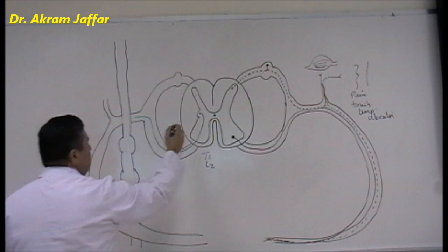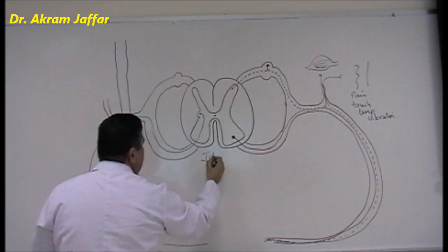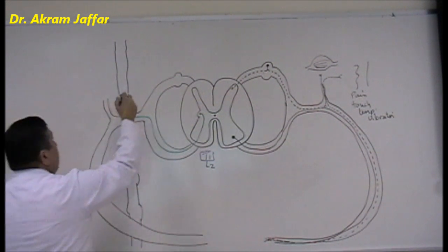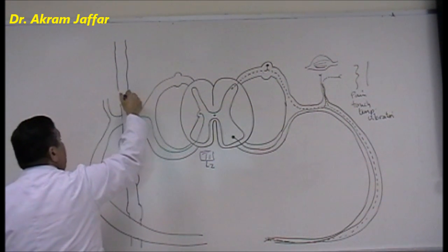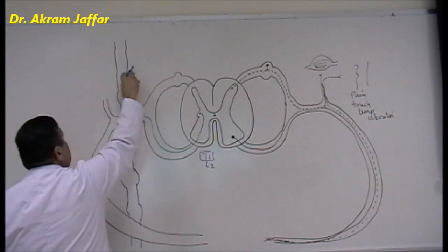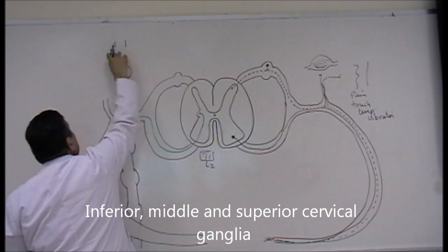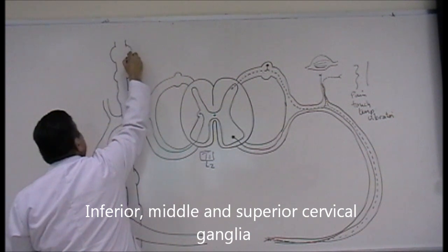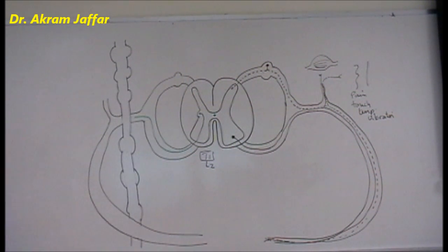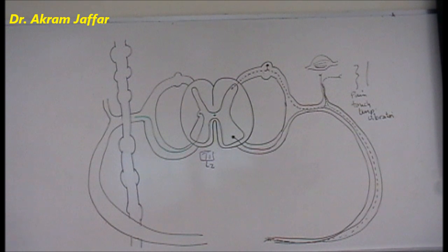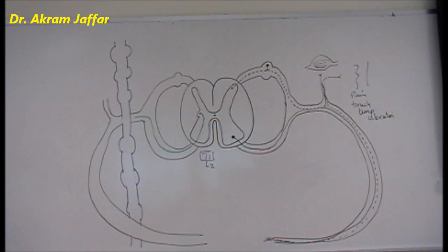At T1 level, there is a T1 ganglion. Above that is the inferior cervical ganglion, then the middle cervical ganglion, and a very large one superiorly called the superior cervical ganglion — so three cervical ganglia, although there are eight cervical spinal nerves. In the thoracic region, there are approximately 11 thoracic sympathetic ganglia for 12 thoracic spinal nerves. So the number of ganglia is not necessarily equal to the number of spinal nerves.